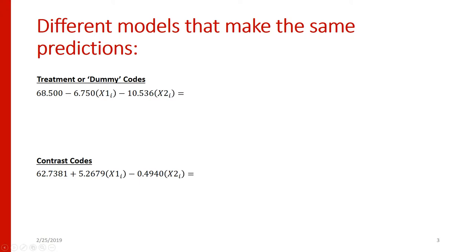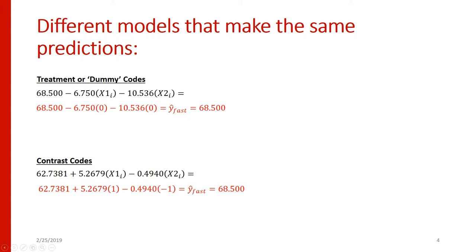So why exactly does this happen? How can we have different models that make the same set of predictions? Let's start with our model for treatment codes at the top and contrast codes at the bottom. The intercepts are different because what x equals 0 means is different in these two models. In the treatment-coded case, x is 0 in the fast group, whereas in the contrast-coded case, x is 0 on average across all levels of the factor. So the intercept is one of our group means in the treatment model, whereas in the contrast model the intercept is just the grand mean.